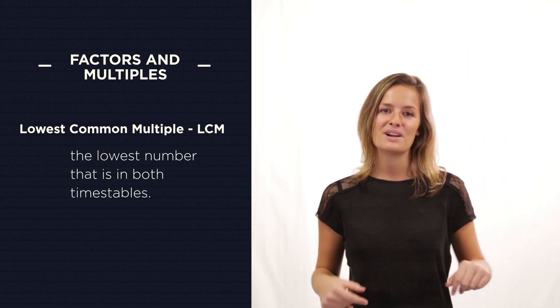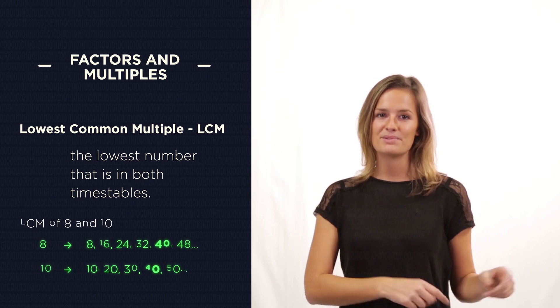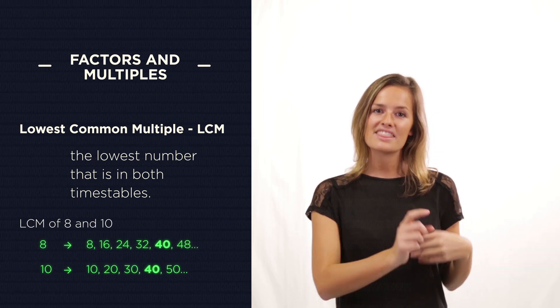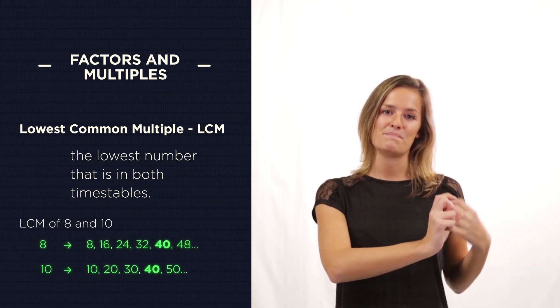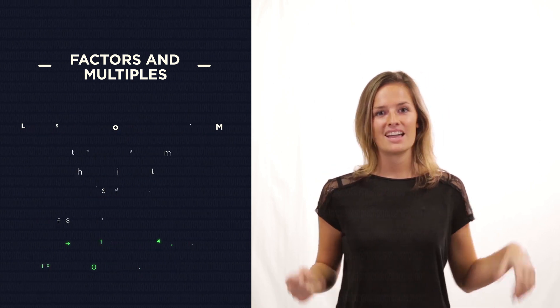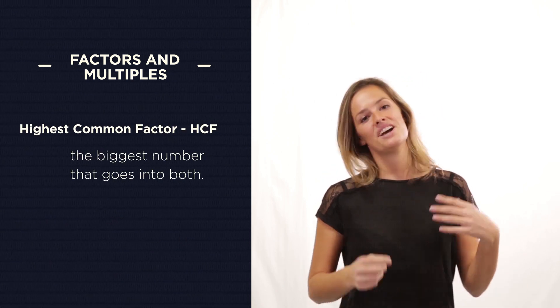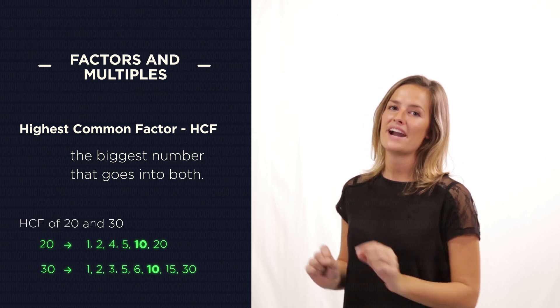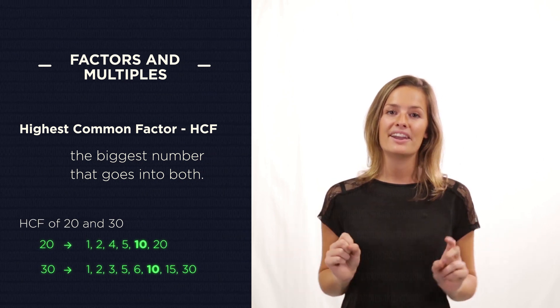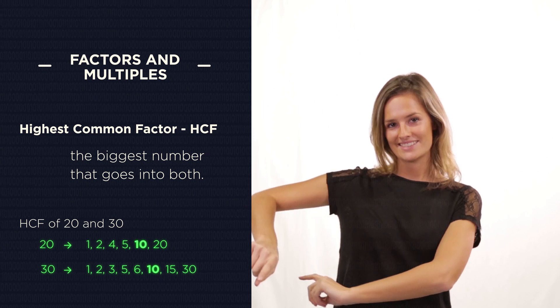So for the lowest common multiple, we just list out the times tables of both numbers. And then we find the first number that is in both lists. And for the highest common factor, we list out all of the factors of both numbers and look to see what the biggest number is in both lists.